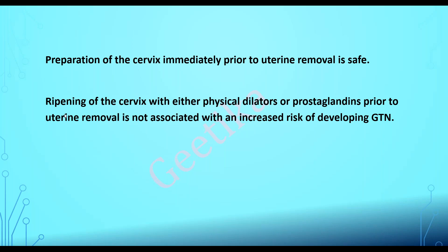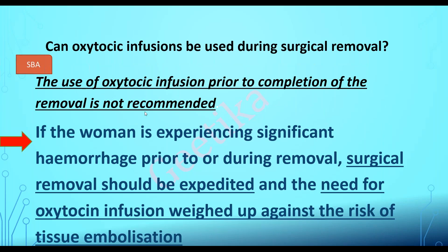Regarding oxytocic infusion during surgical removal: the use of oxytocic infusion prior to completion of the removal is not recommended because it causes myometrial contraction and trophoblastic embolization. However, if the patient is having heavy torrential bleeding during the procedure, the first step is to expedite the surgical removal — always under consultant guidance. The need for oxytocin infusion should then be weighed against the risk of embolization.